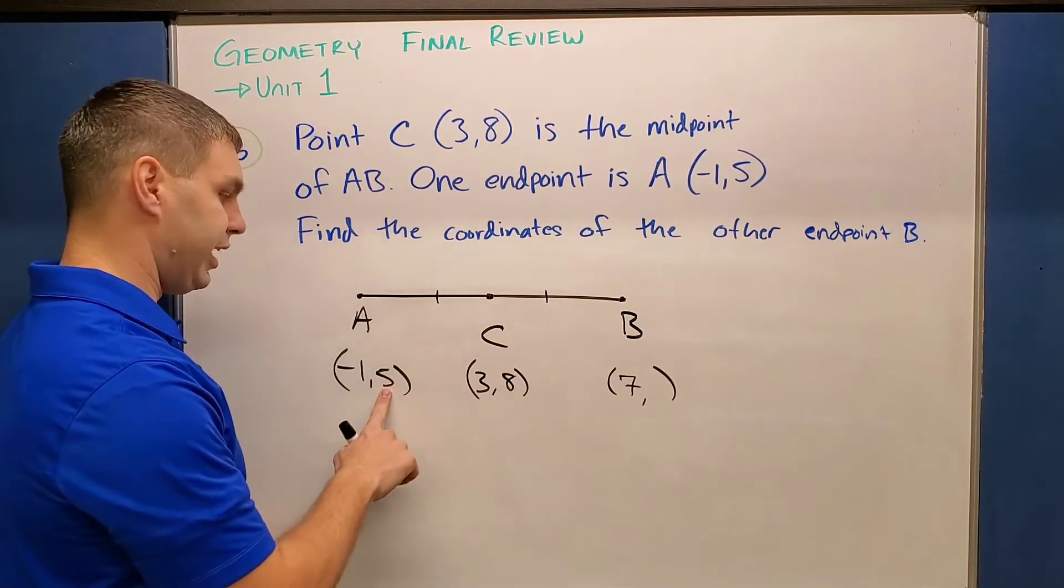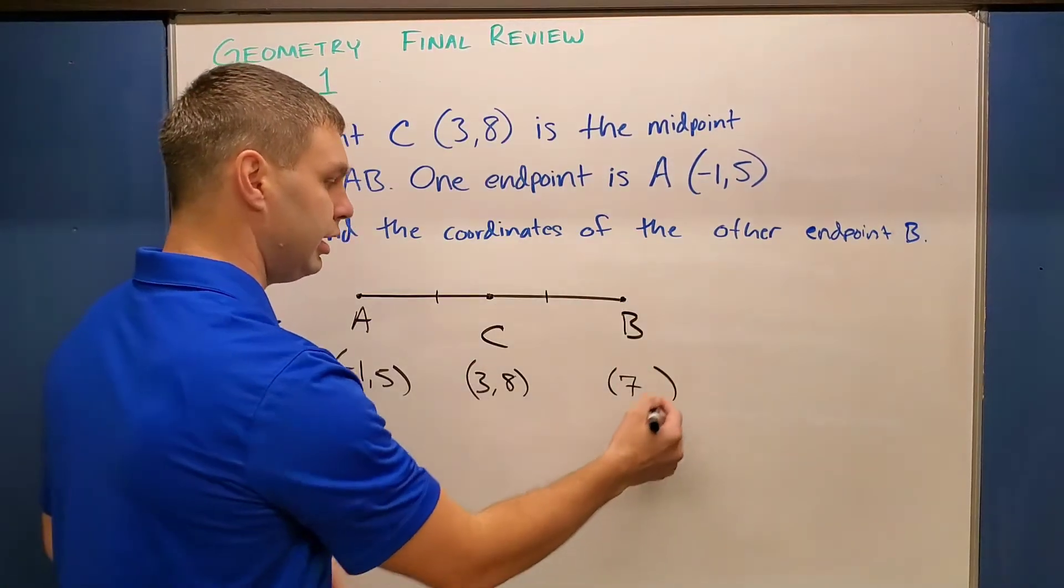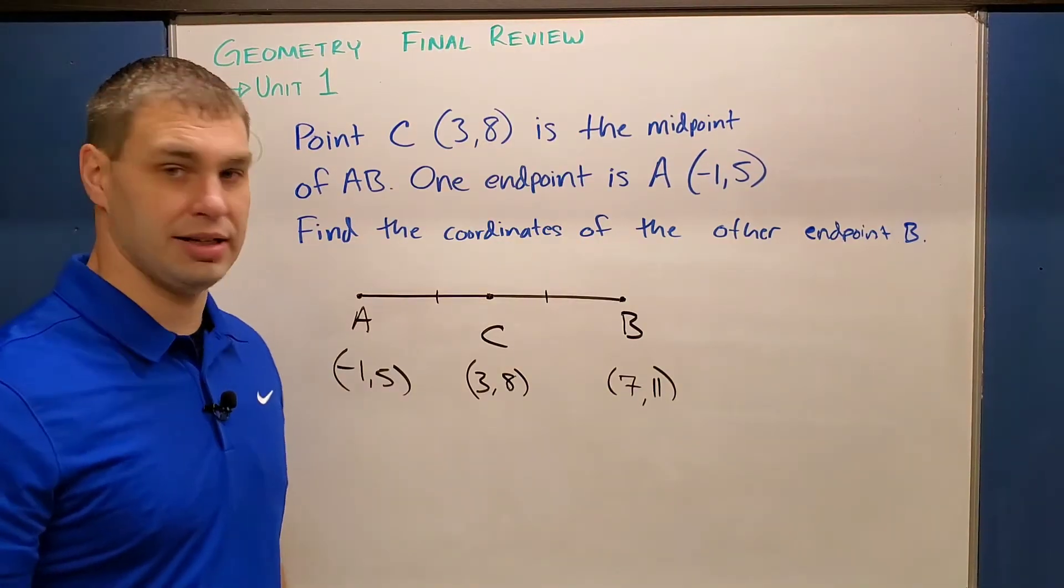If I do the same thing with the Y values, 5 plus 3 is 8. So 8 plus 3 more would get me to 11. And then my endpoint for B is (7,11).